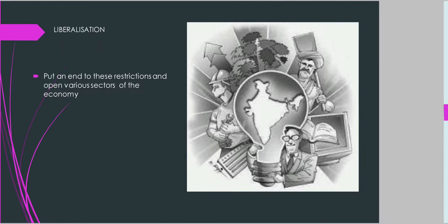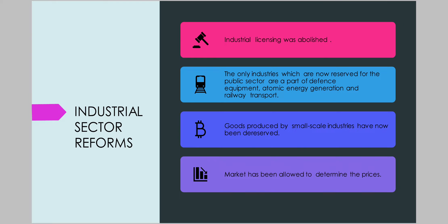Let's see how liberalization measures were introduced in different sectors of Indian economy, starting with the industrial sector. The industrial sector was under so many restrictions prior to 1991. These restrictions were relaxed under liberalization.